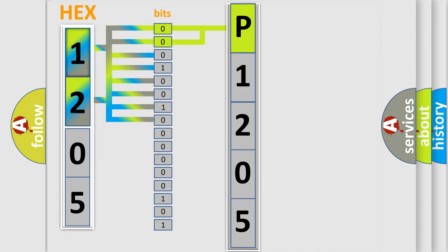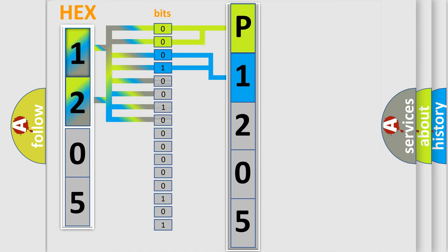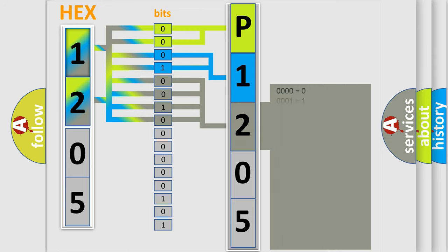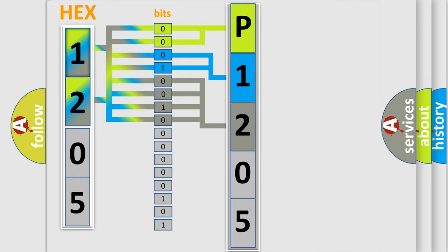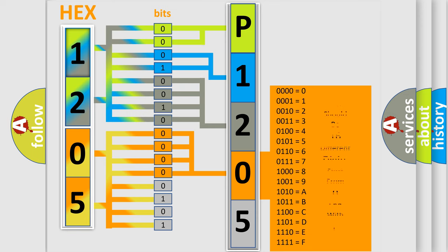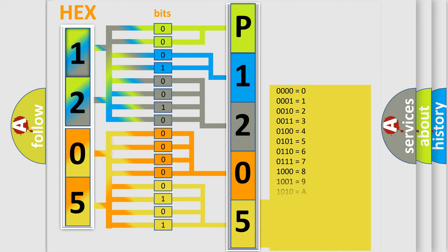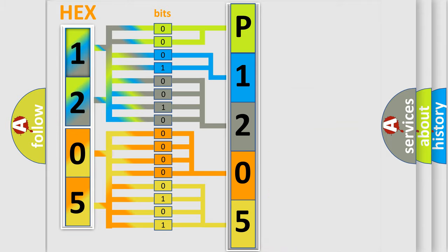The next two bits determine the second character. The last bit styles of the first byte define the third character of the code. The second byte is composed of a combination of eight bits. The first four bits determine the fourth character of the code, and the combination of the last four bits defines the fifth character. A single byte conceals 256 possible combinations.